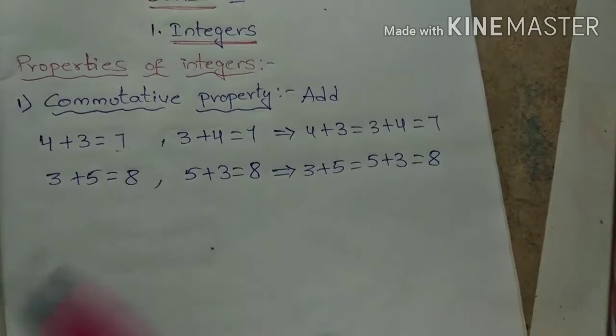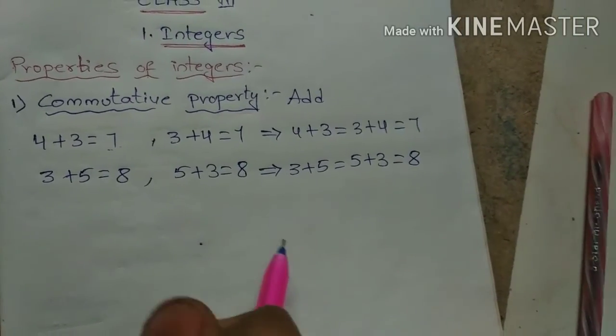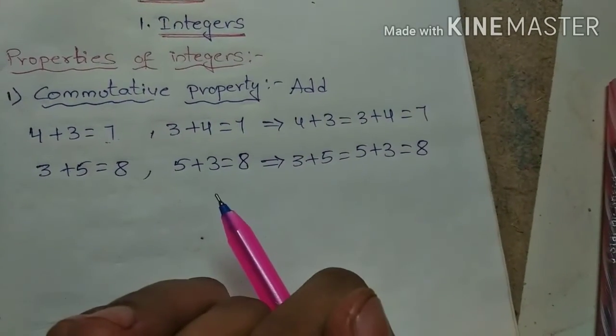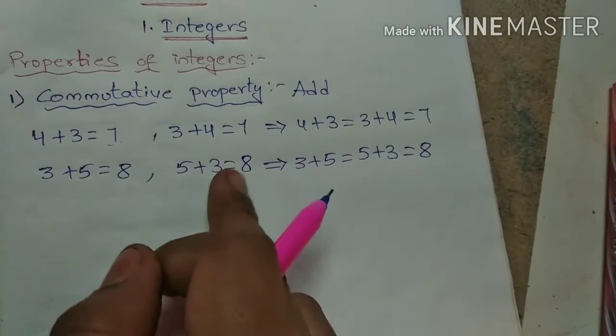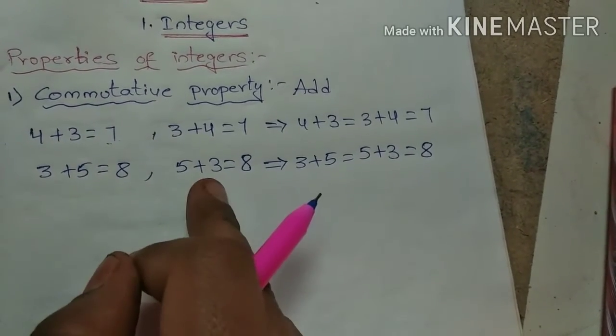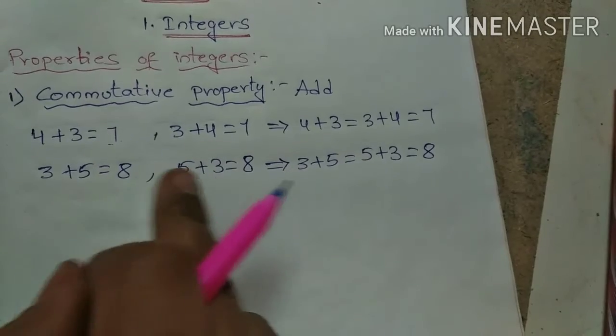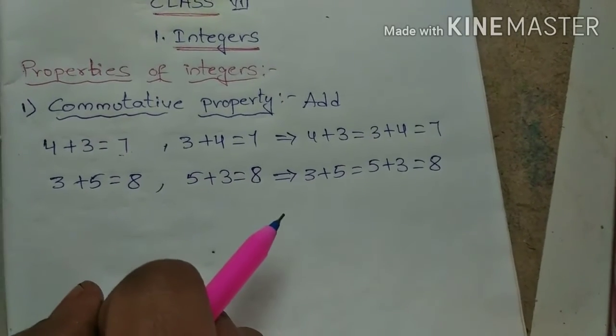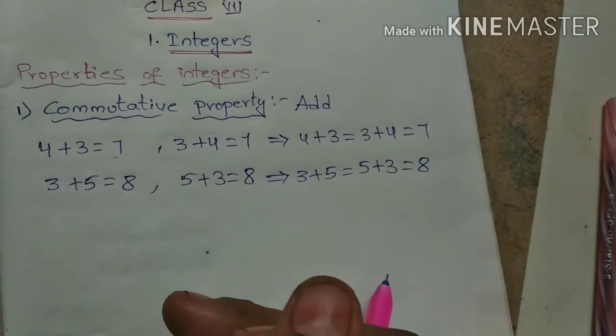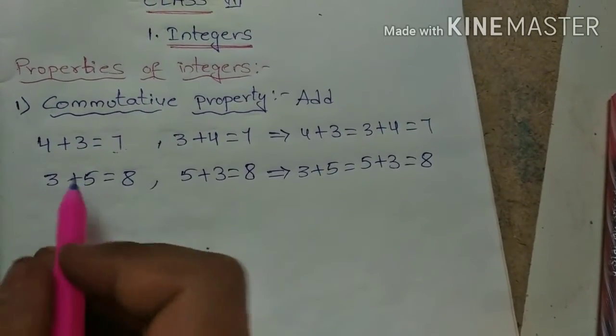Did you find any pair of whole numbers for which the sum is different? Is anything different coming in the result? No. If we change this order, there is no difference in the result. Then we say that addition of whole numbers is commutative.